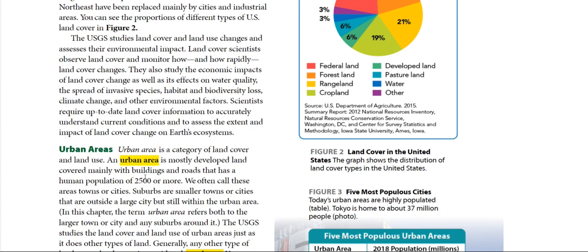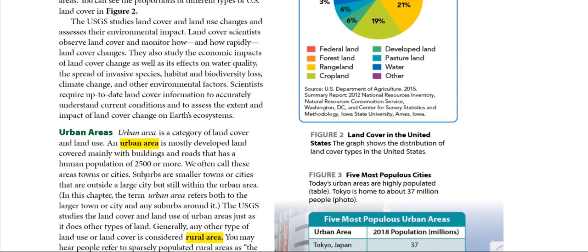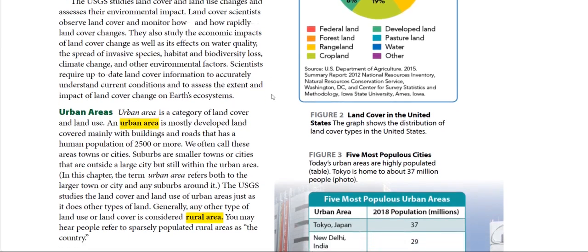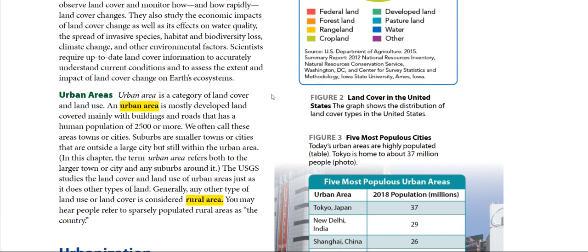Now we're going to talk about the urban area, which is a category of land cover and land use. An urban area is mostly developed land covered mainly with buildings, with a human population of two thousand five hundred or more — we often call these areas cities. Suburbs are smaller towns or cities that are outside the large city but still within the urban area, and we can see suburbs around it.